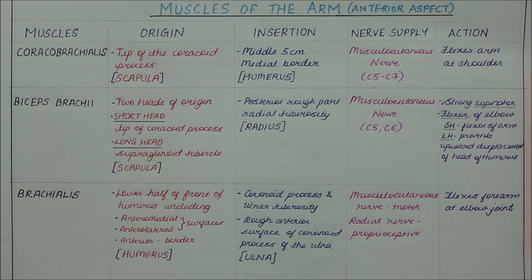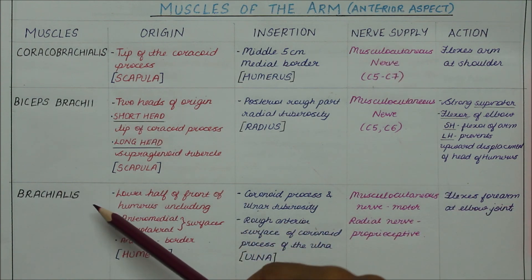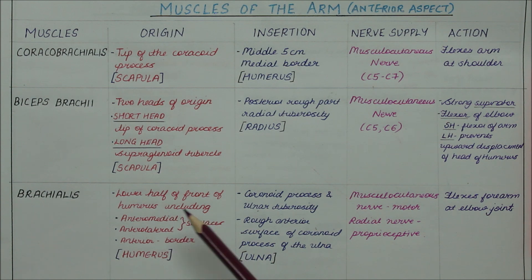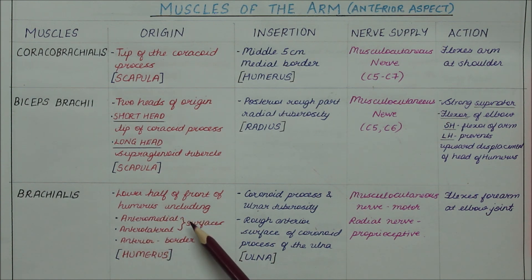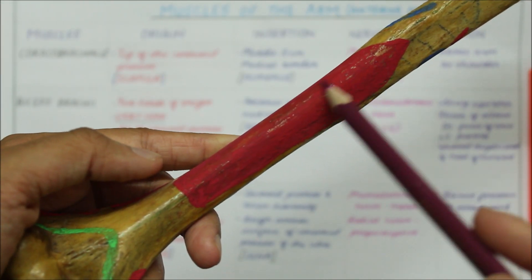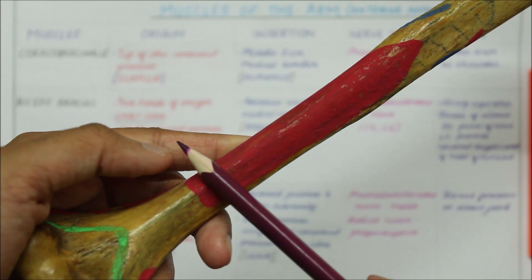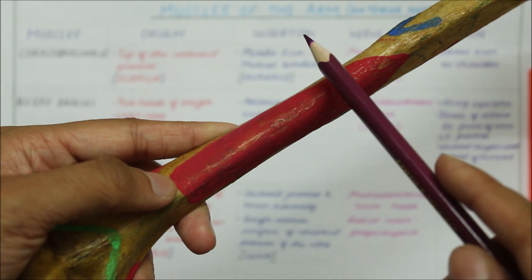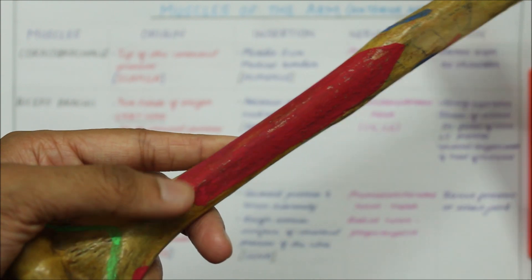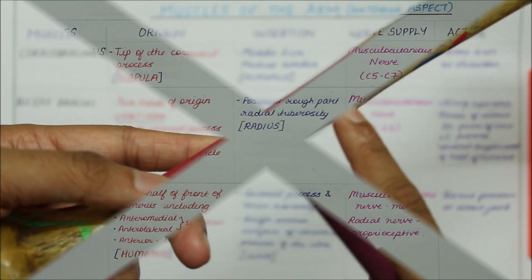Moving on to the next muscle, we have the brachialis. It originates from the lower half of the front of the humerus including the anteromedial, anterolateral surfaces and the anterior border of the humerus, as you can see right here.